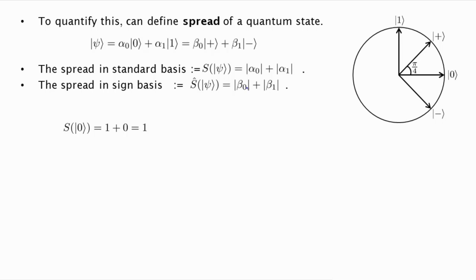So you see, when we know the bit value perfectly, the spread is 1, because we'll get either alpha 0 equal to 1 and alpha 1 equal to 0, or vice versa, in either case the spread is 1. On the other hand, in the case that we don't know the bit value at all, the worst case is if we have the state plus, in which case we really don't know the bit value at all. Then the alpha 0 and alpha 1 are both 1 over square root 2, so the spread is square root 2.